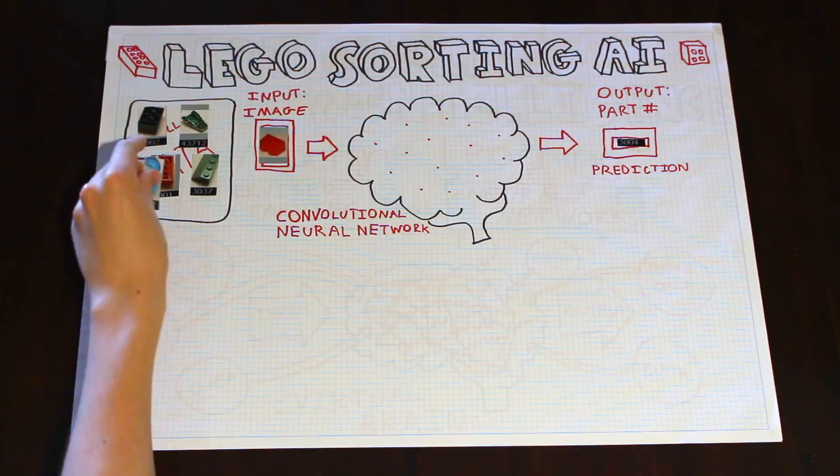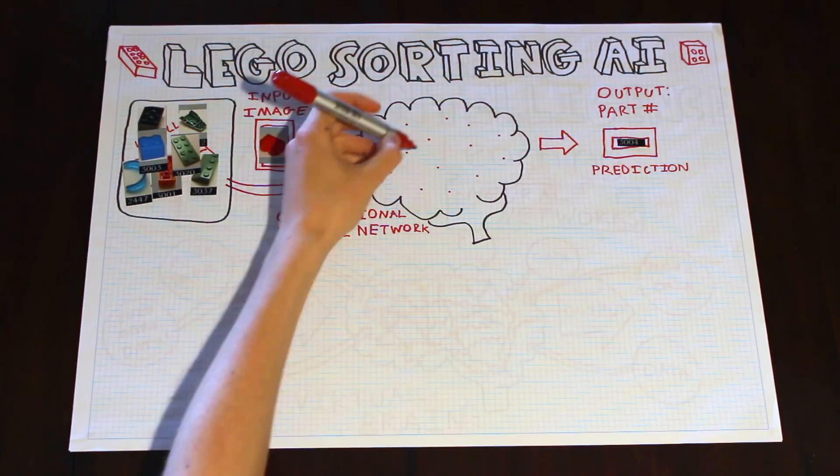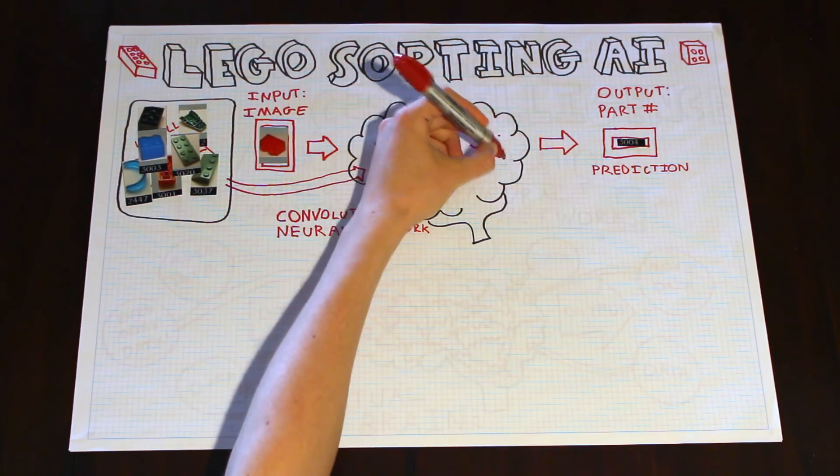For each input image, we need to tell the neural network what part number it is. Then, you can use the images and the labels together to build up the connections in the brain that we need.